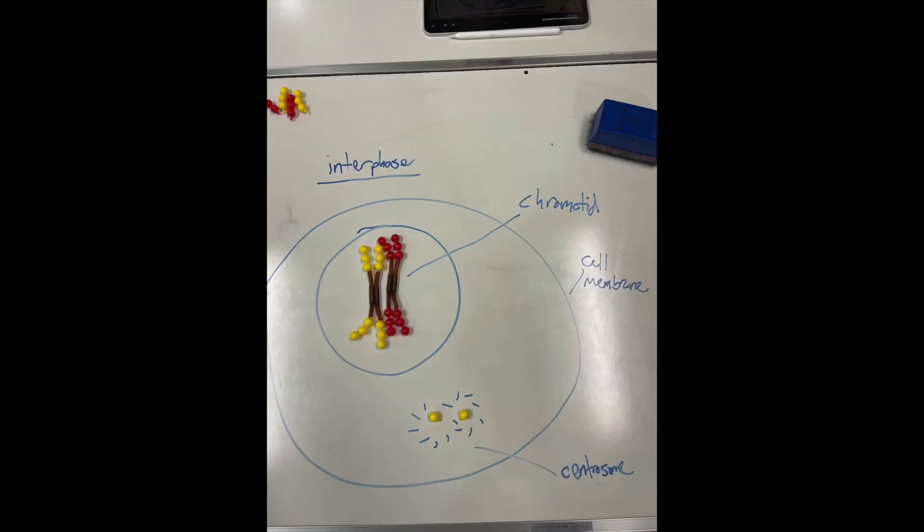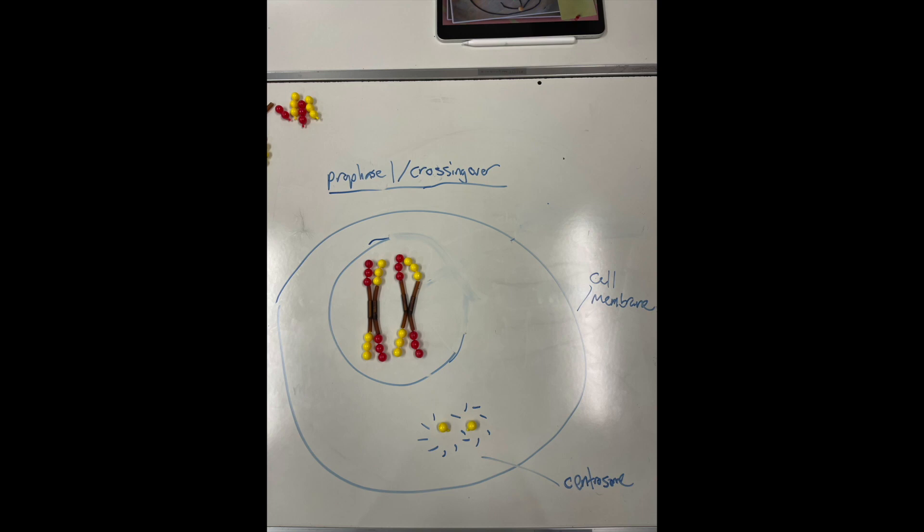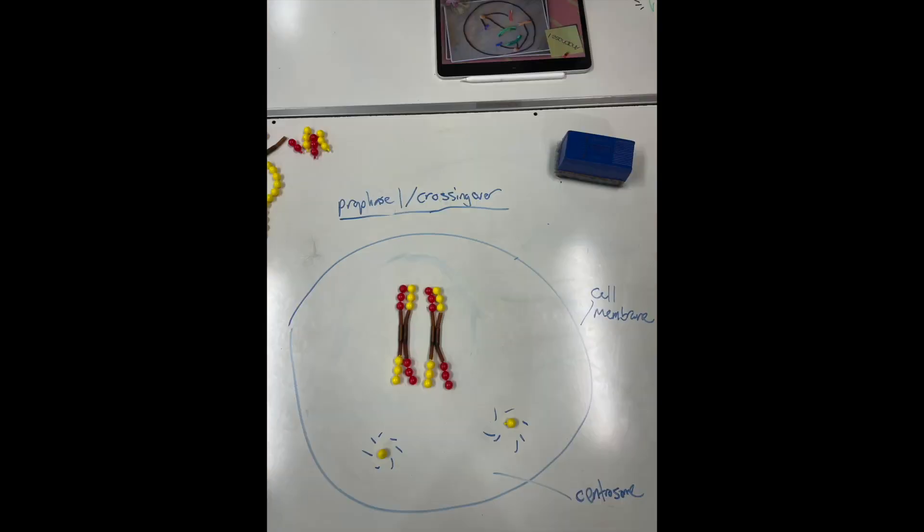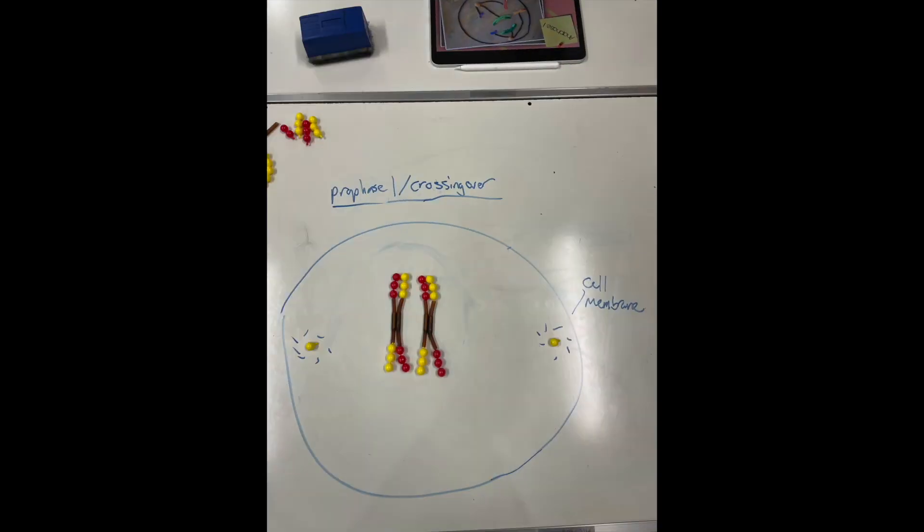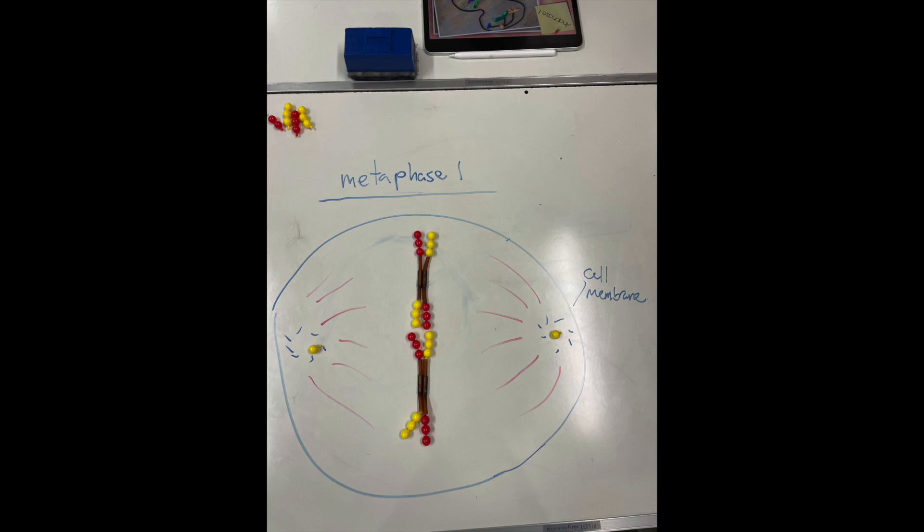Next is prophase 1, where the nuclear envelope breaks down and homologous chromosomes exchange genetic information in a process called crossing over. Next is metaphase 1, where the chromosomes align on the metaphase plate.